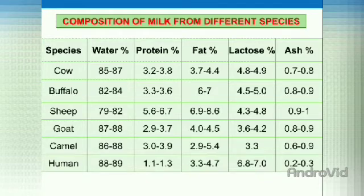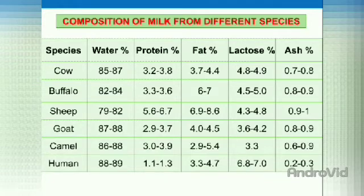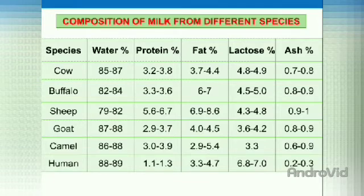The next species is human. In human's milk, the water percentage is 88 to 89%, protein 1.1 to 1.3%, and fat 3.3 to 4.5%. In human's milk, the protein and ash percentage are low compared to any other species — protein 1.1 to 1.3% and ash 0.2 to 0.3%. The lactose percentage is high compared to any other species, that is 6.8 to 7%.